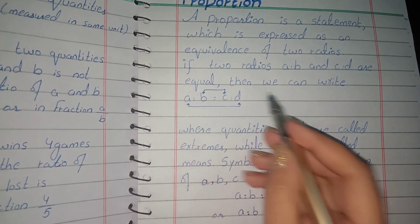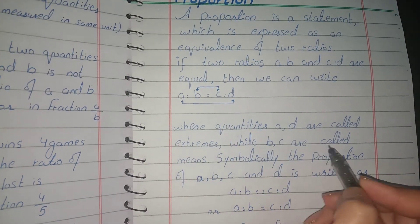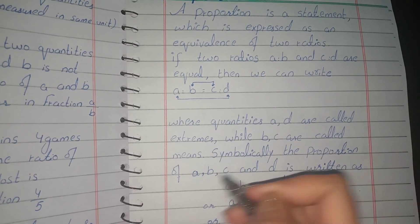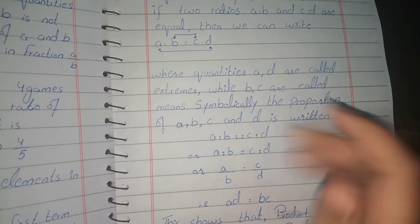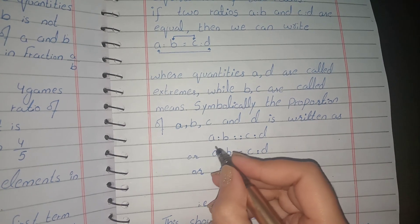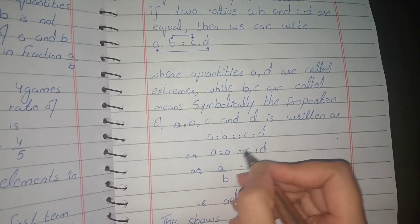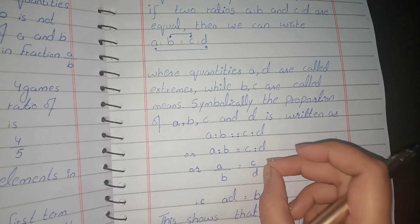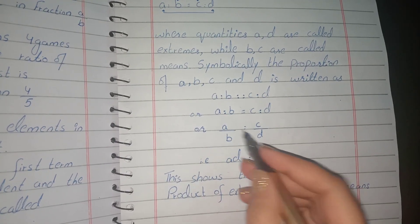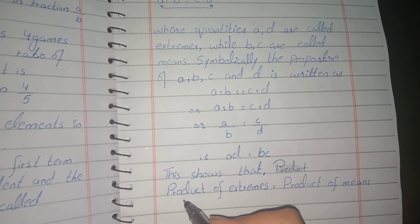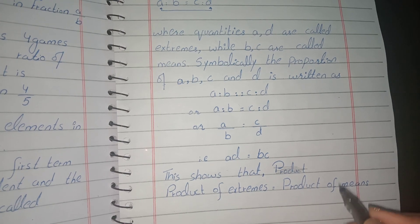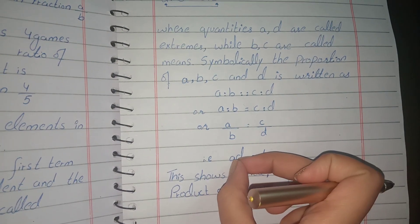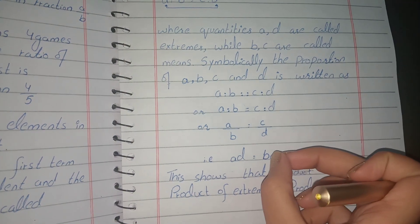In a proportion a:b :: c:d, the quantities a and d are called extremes, and b and c are called means. Symbolically, a/b = c/d, which means the product of extremes equals the product of means: a×d = b×c.